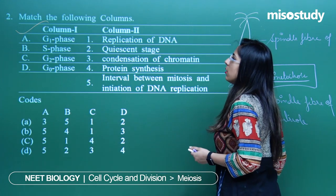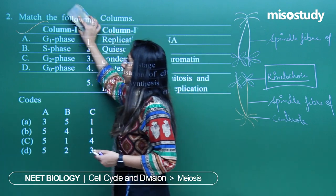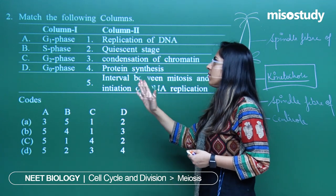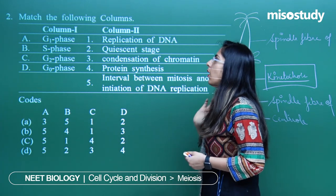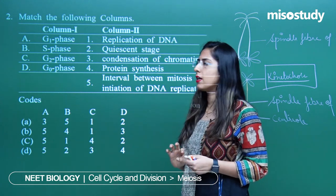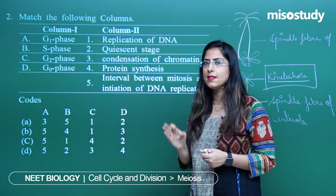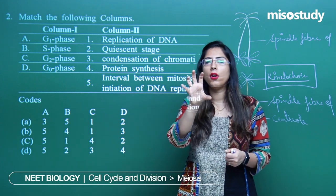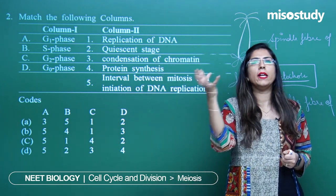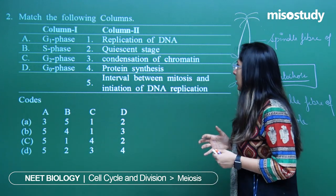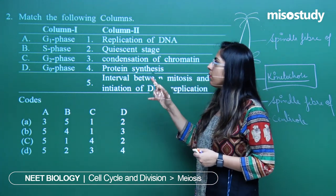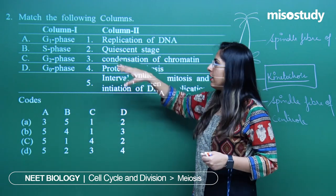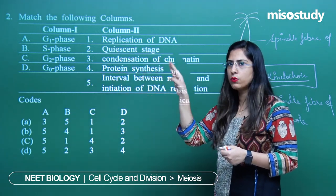Let's look at the second question, matching column 1 and column 2. Column 1 has G1, S, G2, and G0 phases. The G1 phase is the starting phase — the cell has already completed one mitosis and has to enter the second mitosis cycle. The whole cycle goes: G1 phase, then S phase, then G2 phase, then M phase.